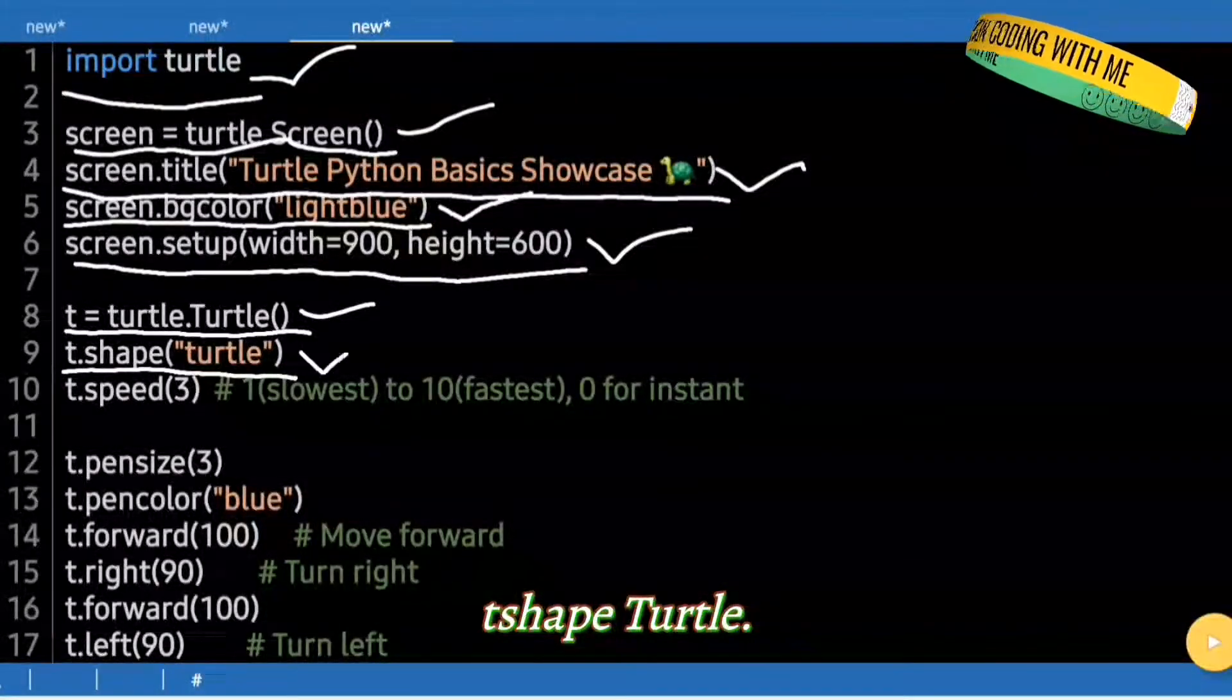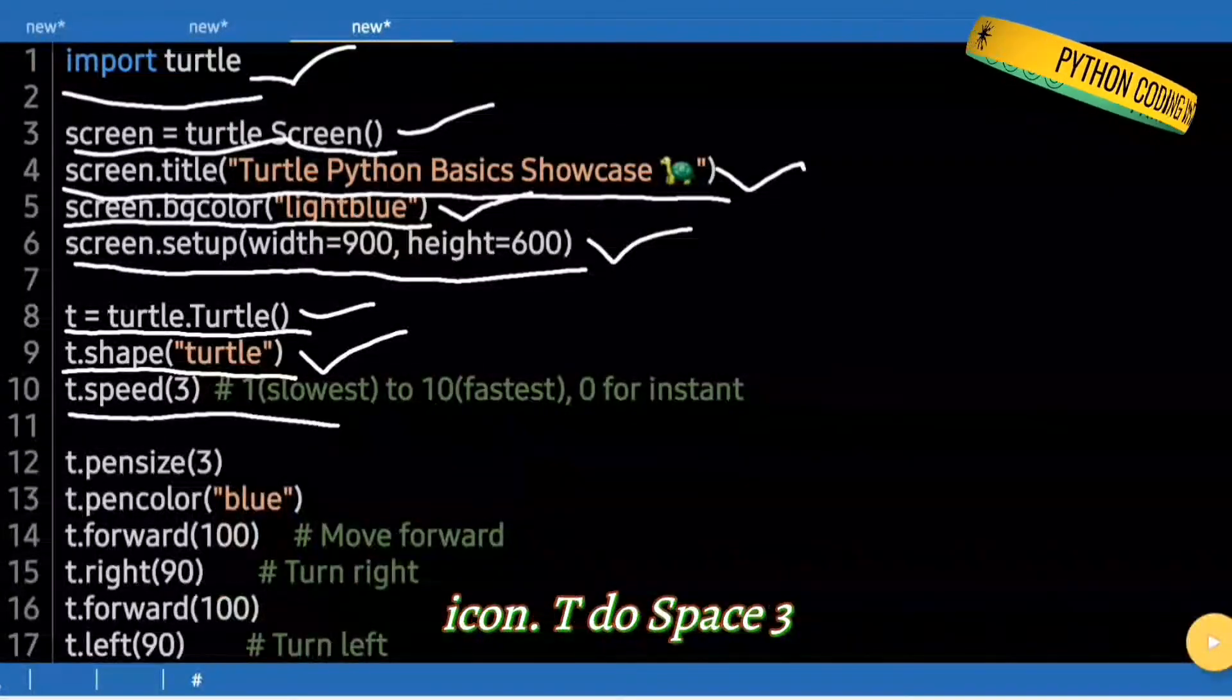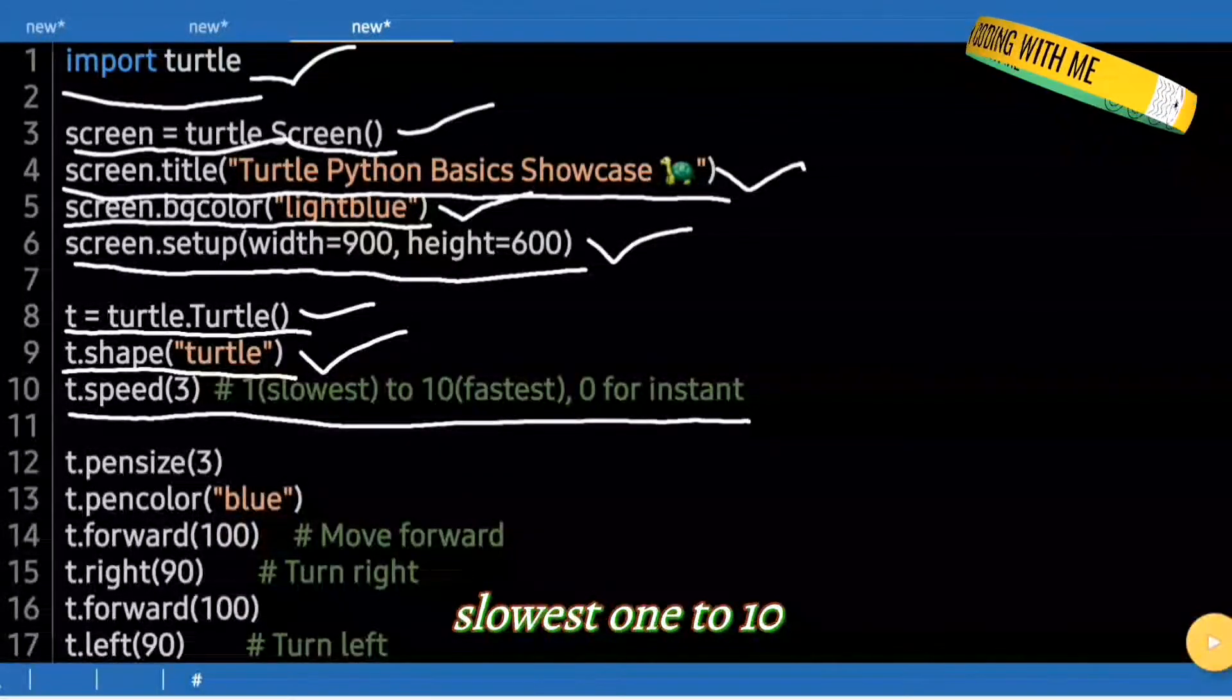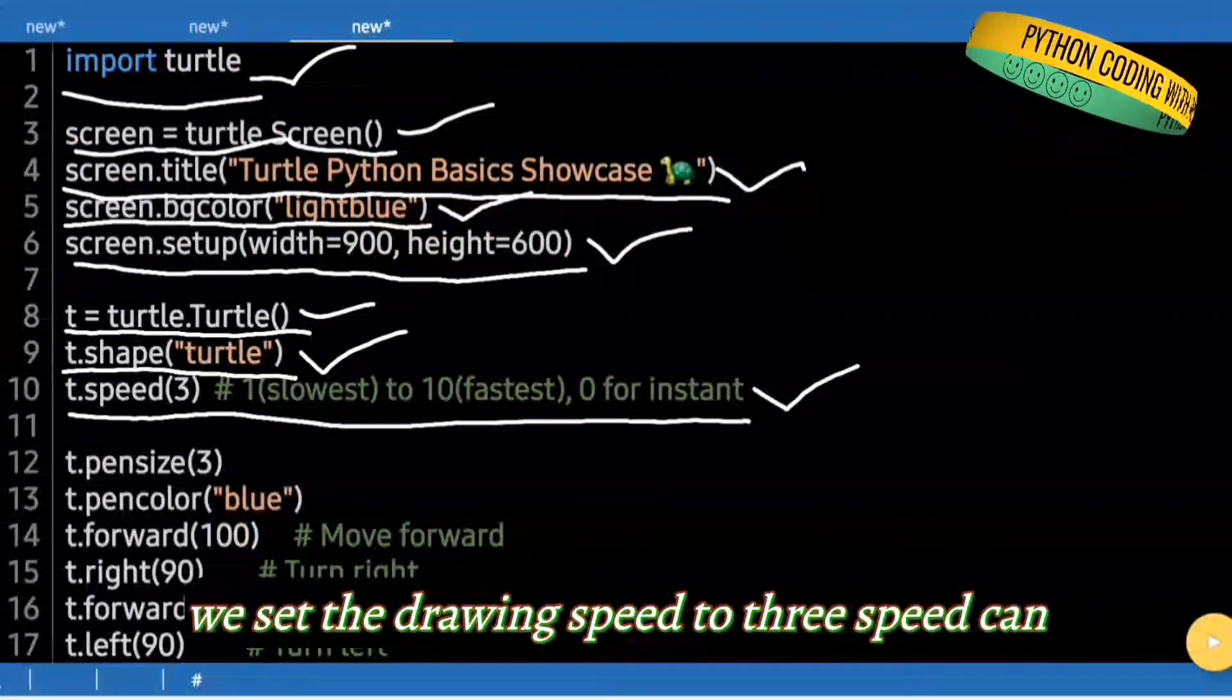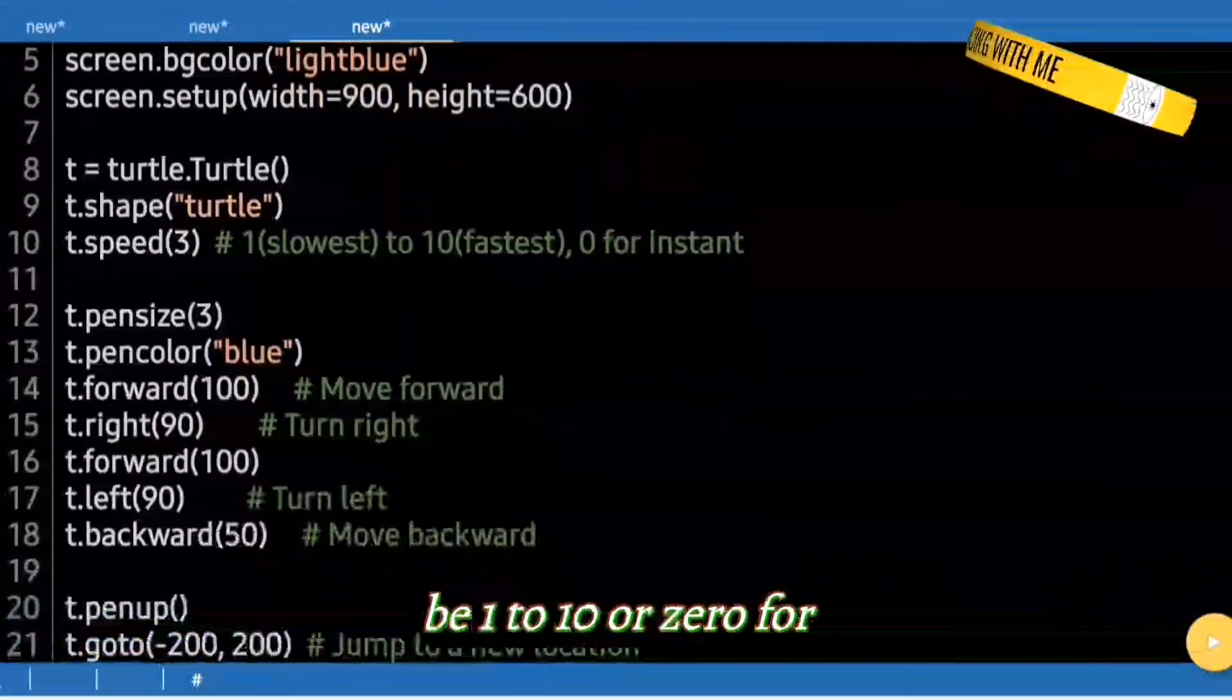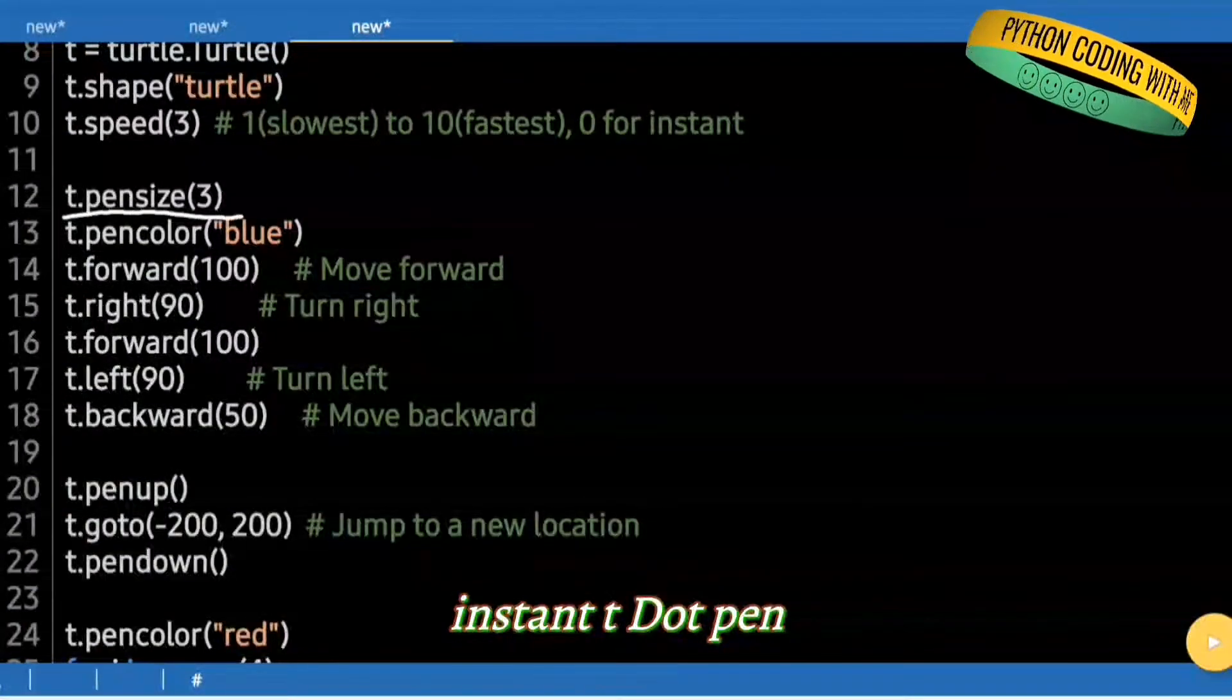T.shape("turtle"). We change the Turtle's cursor shape to a turtle icon. t.speed(3), slowest is 1, to 10 fastest, 0 for instant. We set the drawing speed to 3. Speed can be 1 to 10, or 0 for instant.